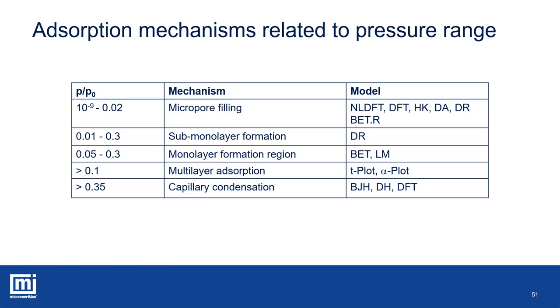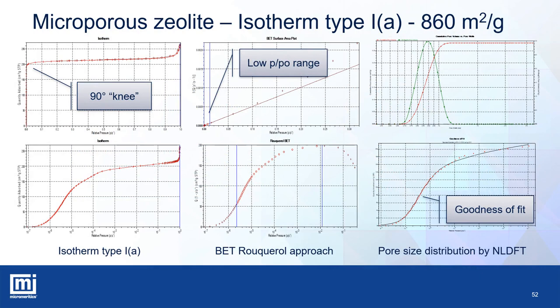This is an example of a zeolite showing an isotherm type 1A, identified by the typical 90-degree knee and absence of hysteresis between adsorption and desorption branches, indicating that mesopores are not present. Adsorption begins at very low relative pressure, about 10⁻⁷, as clearly shown in the log-scale graph. The equivalent surface area can be calculated by the BET equation. The relative pressure range has a higher limit of about 10⁻² for this isotherm type, whereas for other types this limit is set to 0.3 relative pressure. The most convenient and realistic method for pore size determination is the NLDFT approach, which gives a pore size in the range of super micropores, about 0.7 to 1 nanometer.